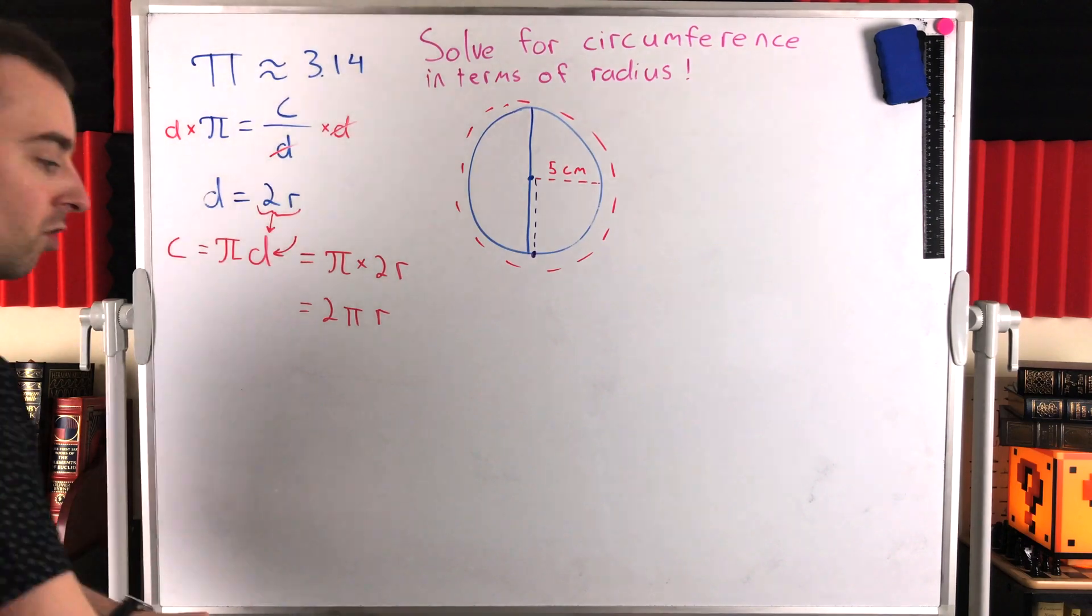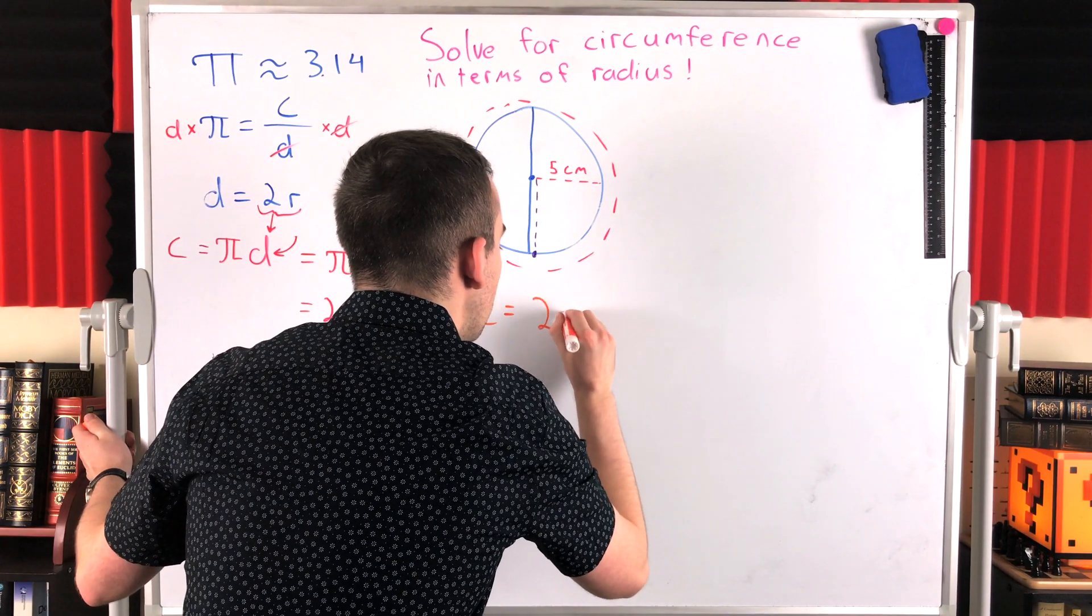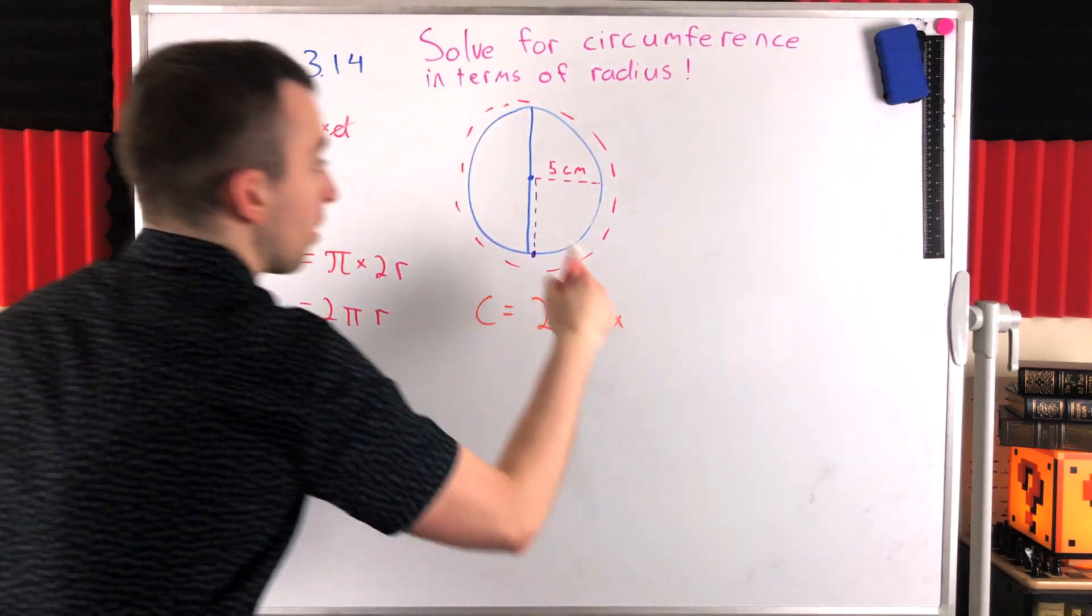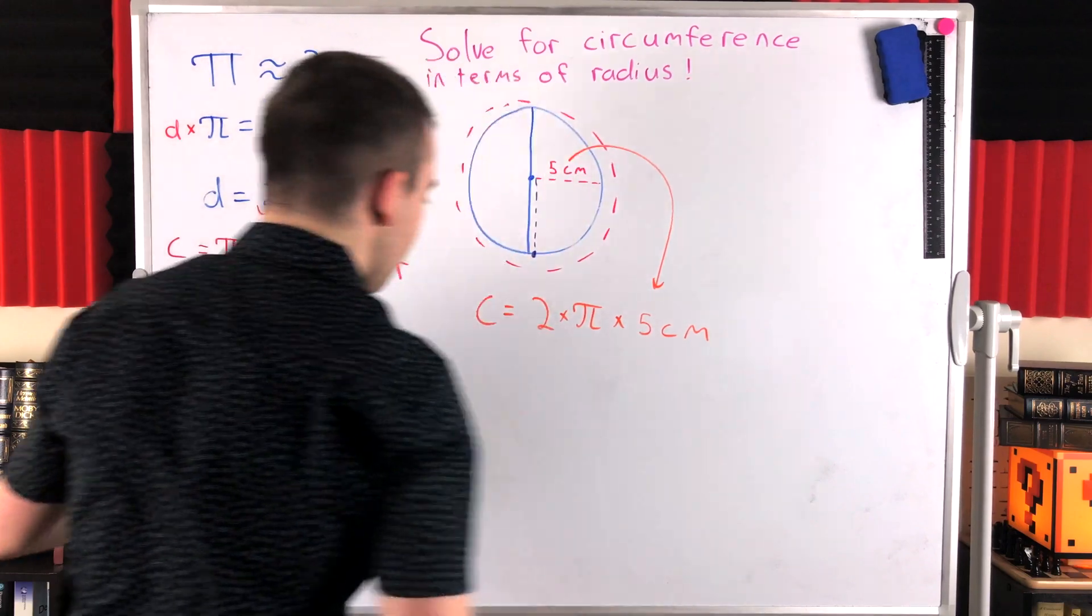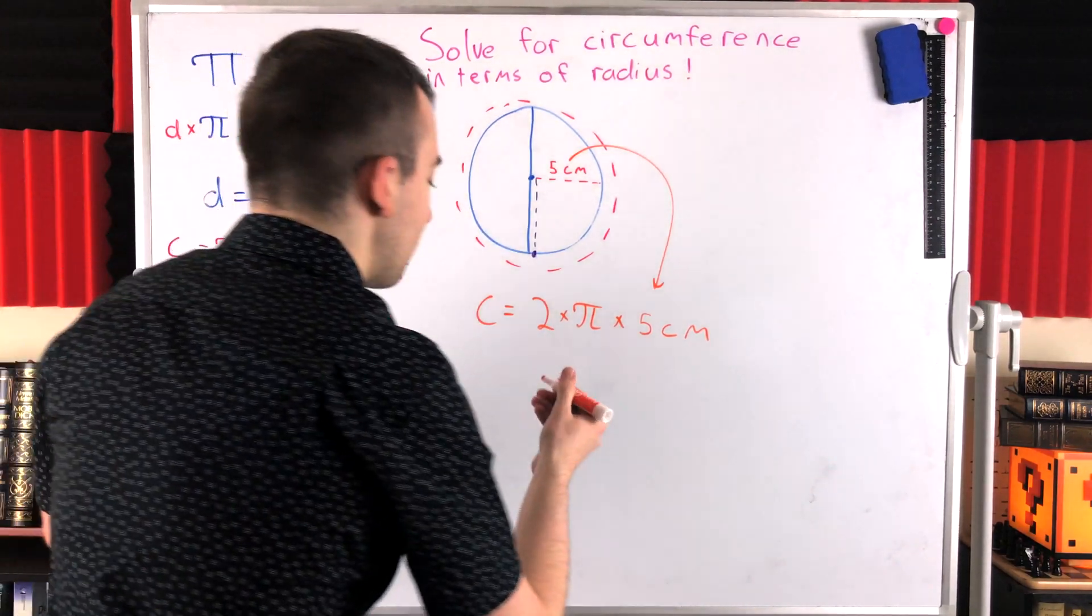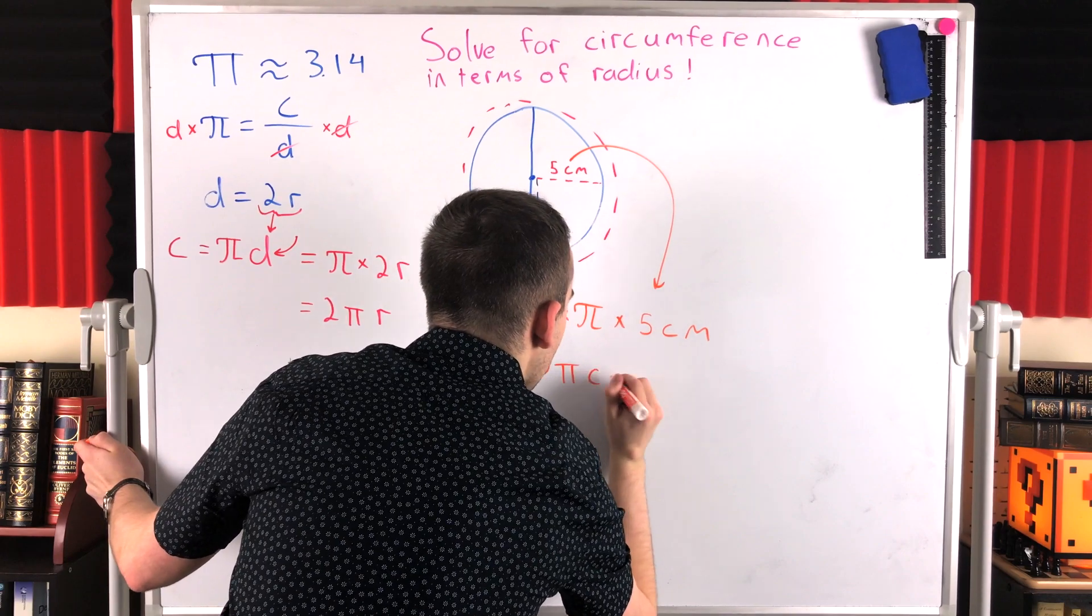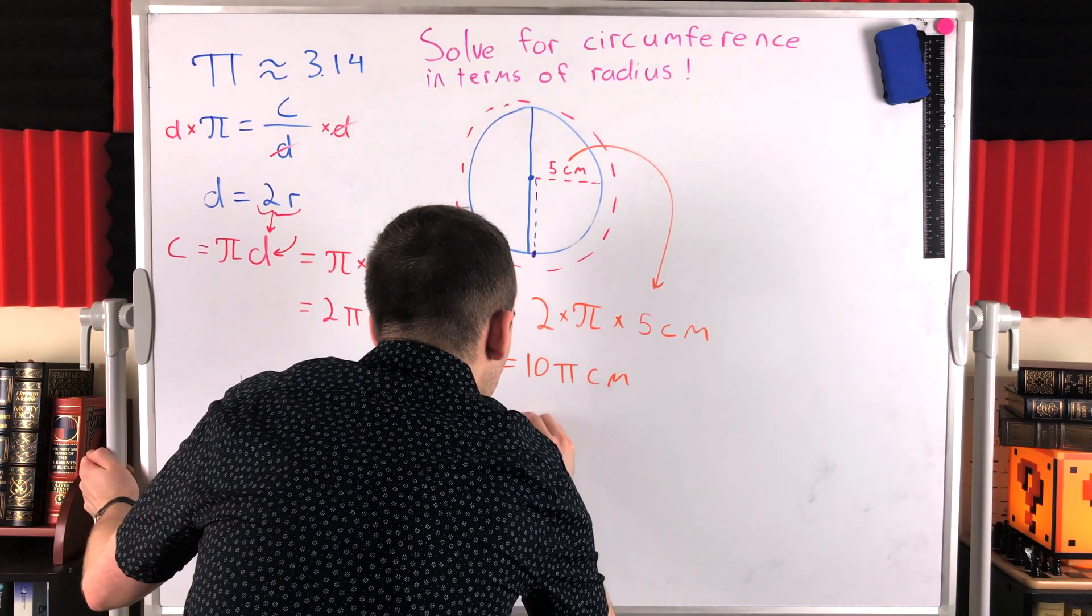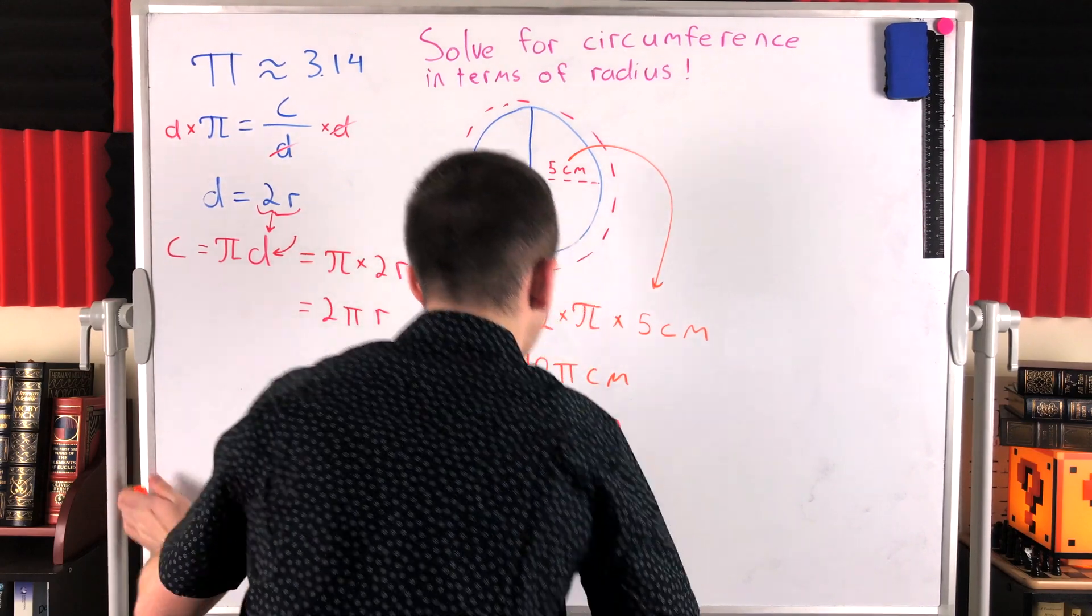Well we can use this equation that we just figured out. Easy peasy. So the circumference of this circle is going to be equal to two times pi times the radius. Two times pi times the radius, which in this case is five centimeters. Wonderful. Two times five, remember we can multiply in whatever order we please. Two times five is 10. So we could rewrite this as 10 pi centimeters. And that would be an exact answer, but you'll often be asked to round. So this is approximately 31.42. And that's all there is to it.